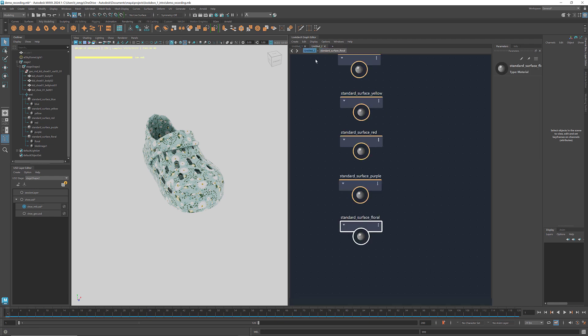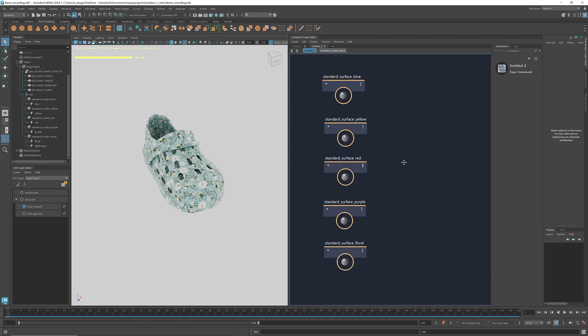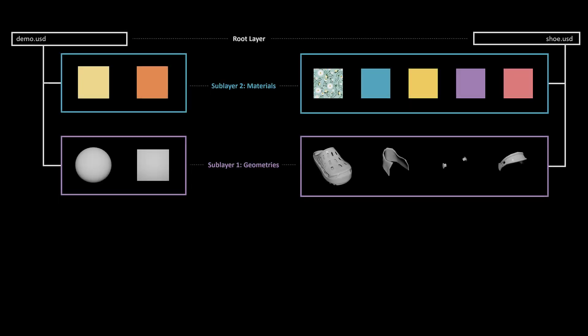That's it for today. To recap, we learned the basic structure of a USD stage, how to assign materials, and how to adjust them in LookDevX. We'll have more LookDevX tutorials coming soon. I'll see you next time.